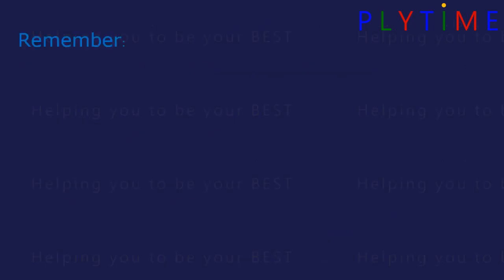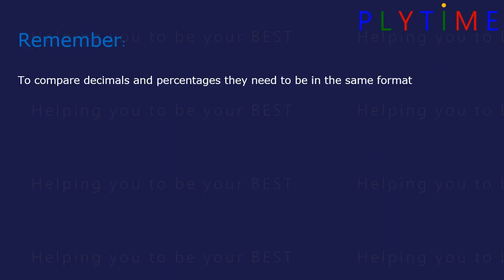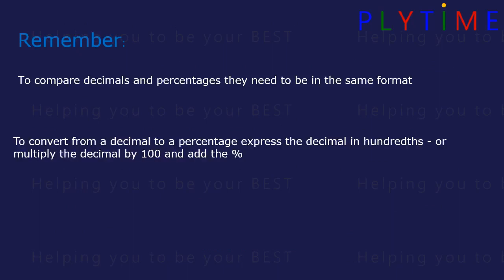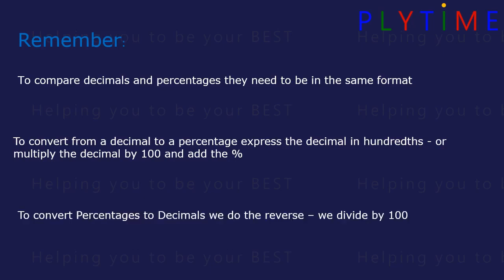Remember, to compare decimals and percentages they need to be in the same format, either both decimals or both percentages. To convert from a decimal to a percentage, express the decimal in hundredths, or multiply the decimal by 100 and add the percentage sign. To convert from a percentage to a decimal, we do the reverse — we divide by 100.